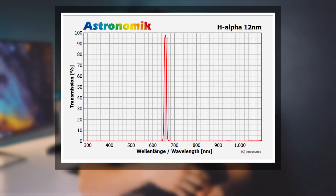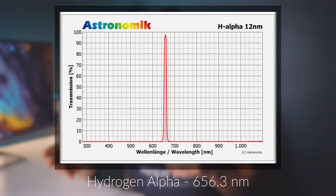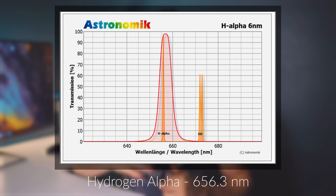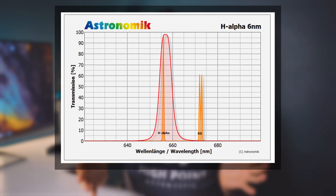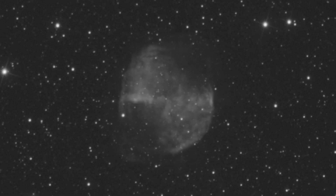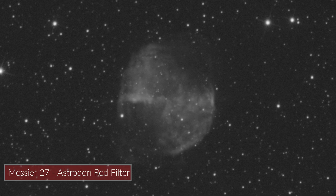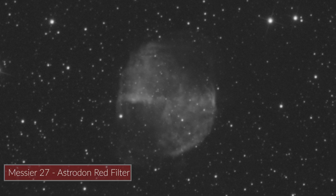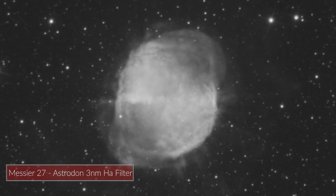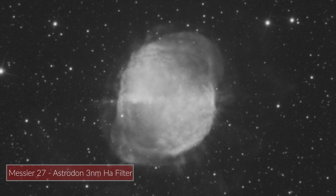Let's take hydrogen alpha for example, whose emission line sits on the spectrum at 656.3 nanometers. This emission line actually lies close to the middle of the red spectrum, which is rather wide and spans about 150 nanometers. We can directly compare data collected from an Astrodon E series red filter with a bandpass of 60 nanometers and an Astrodon hydrogen alpha filter with a bandpass of 3 nanometers. As you can see in this example, the difference between the two images is staggering. The narrower the bandpass of your filter, the better the detail, the contrast, and the light pollution reduction capabilities.